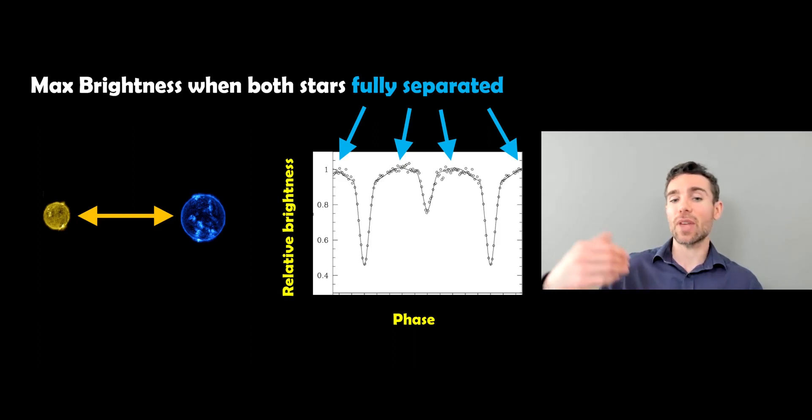So we can measure the brightness. And as they pass in front of each other, they block each other's light out. So actually, you get this sort of shape, this light curve, which is the brightness of the object against time. And you can see it dips in brightness as they pass in front of each other. Now, the maximum brightness is when they're configured like this, so they're not in front of each other. When they're fully separated, you've got the light from both stars, which means it's at its brightest.